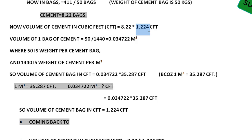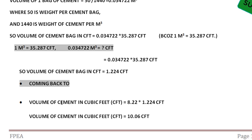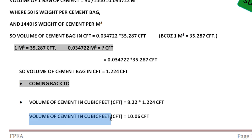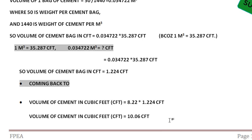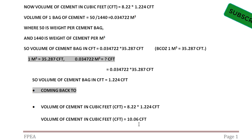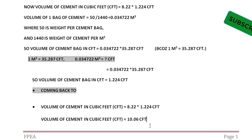Coming back to our original calculation: we have 8.22 bags and the volume per bag is 1.224 cft. So volume of cement in cubic feet = 8.22 × 1.224 = 10.06 cft. So we have calculated cement in cubic meters (0.285), in kilograms (411 kg), in bags (8.22 bags), and in cubic feet (10.06 cft).